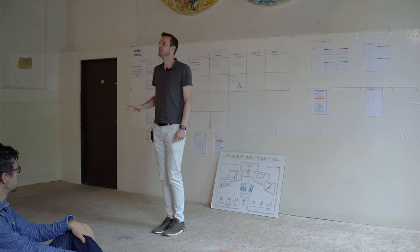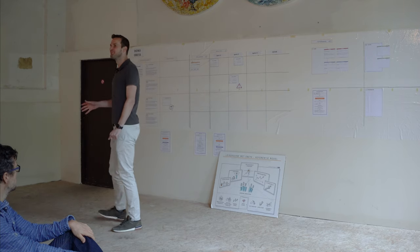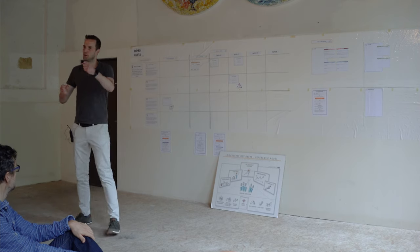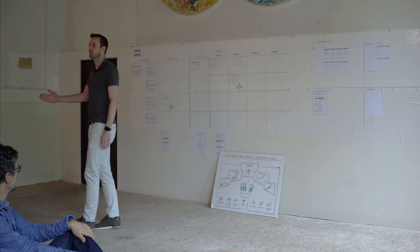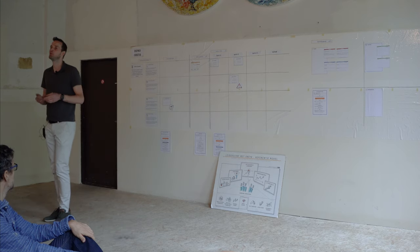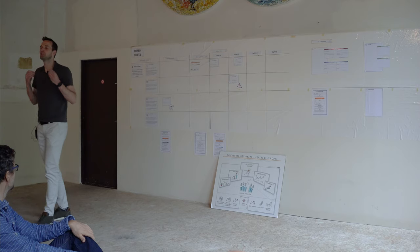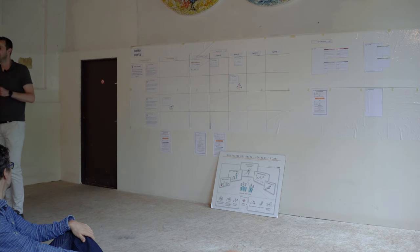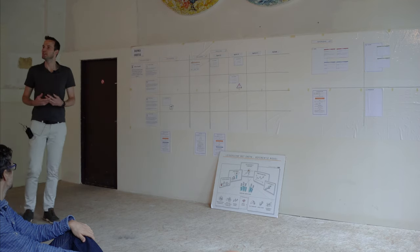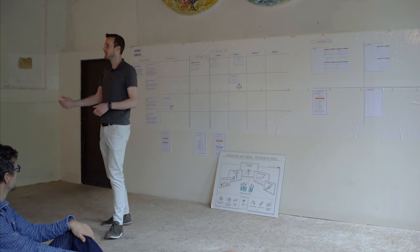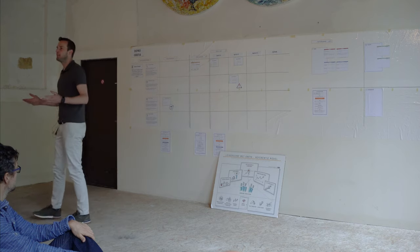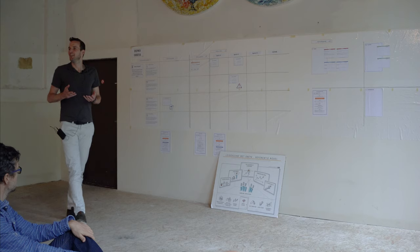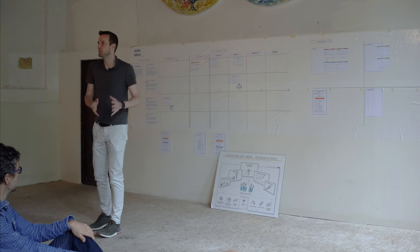Leading with Obeya is about how to treat a cat. Some organizations think their organization is a washing machine — one part breaks, we put another part in and it works again. If your cat is not happy, putting a bow on it won't help. We need to find out what makes our cat happy, and the only way to do that is to learn, experiment, and make it happy. Your Obeya and my Obeya might be different. Whatever works in your context might not work in another context.